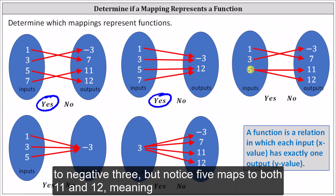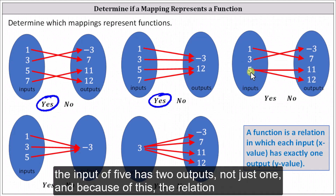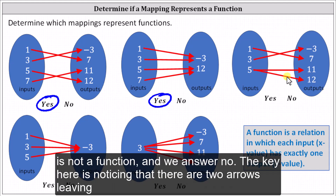But notice five maps to both 11 and 12, meaning the input of five has two outputs, not just one. Because of this, the relation is not a function, and we answer no.